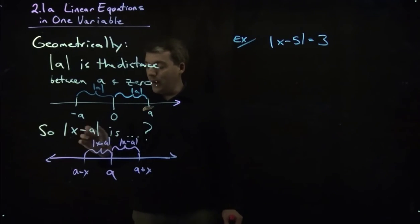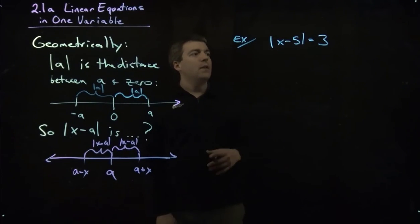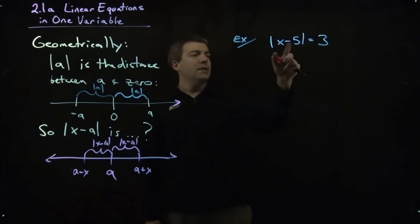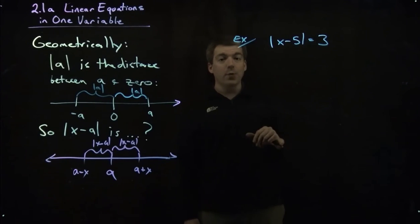So the absolute value of X minus A, that is the distance between X and A. And we can use that fact to solve absolute value equations that look like this. So we have X minus 5, absolute value. So we're saying, well, how far is X away from 5 here? And we're saying that that distance is 3.